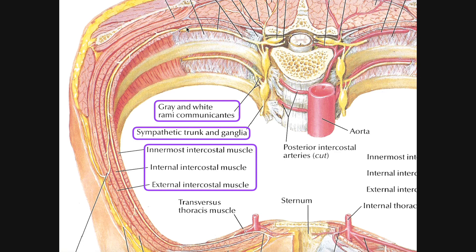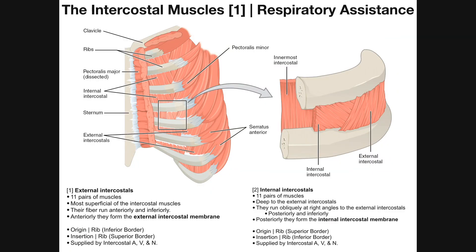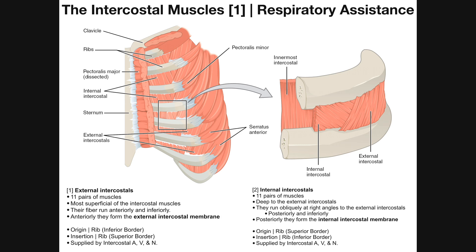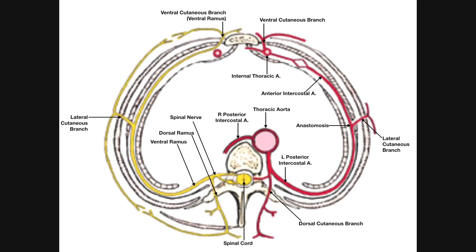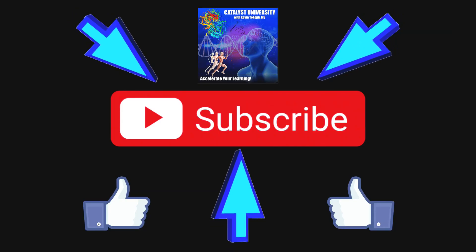Hopefully that gives you a good understanding of the intercostal muscles and the intercostal spaces. In the next few videos, we're going to look in more detail at the blood supply in the intercostal spaces and the nerve supply, and then discuss some of the muscles of the thoracic wall we haven't seen yet. Please make sure to like this video and subscribe to my channel for future videos and notifications.